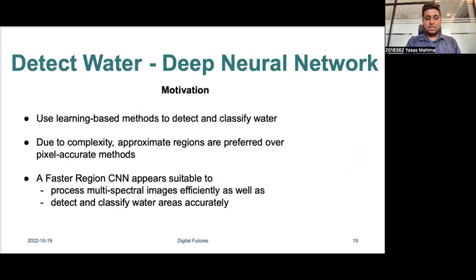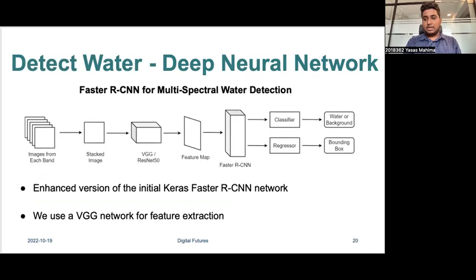Due to the low water detection accuracy of multispectral indices in urban areas, we employ deep neural networks. We have decided for a bounding box or approximate region-based approach, because pixel-accurate methods such as object segmentation are complex. Hence, we have chosen a fast region-based two-step detection network, which is suitable to process multispectral images efficiently and classify water and detect water retention areas accurately. The basic architecture of our Fast R-CNN network extracts images from all bands through a feature selection backbone network to generate feature maps, which are forwarded to the Fast R-CNN model to classify water retention areas and localize bounding boxes.